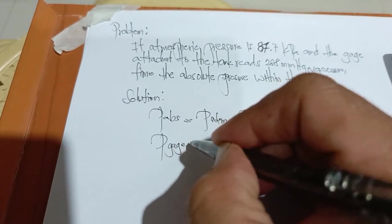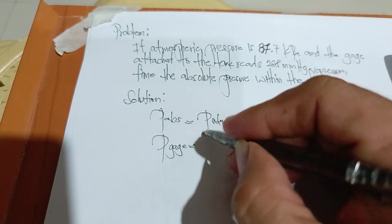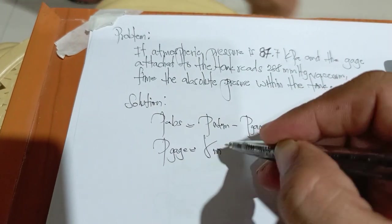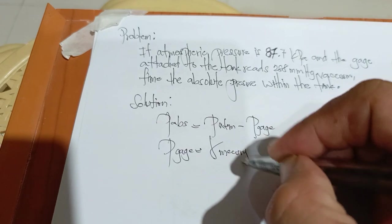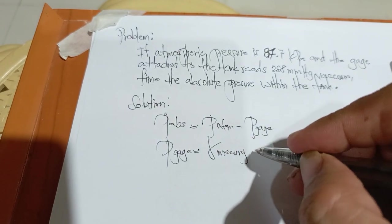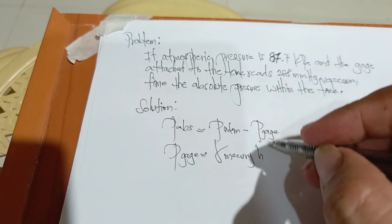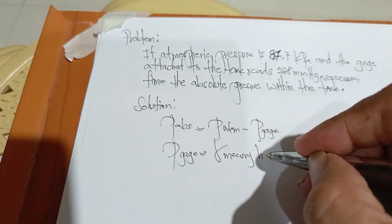Gauge pressure is equals mercury times height of mercury.